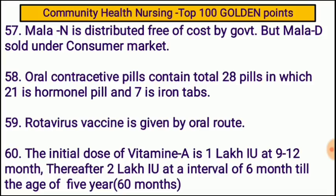The initial dose of Vitamin A is 1 lakh international units at 9 to 12 months, thereafter 2 lakh international units at an interval of 6 months till the age of 5 years.